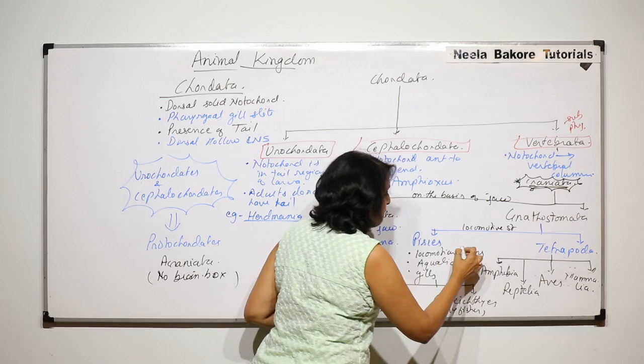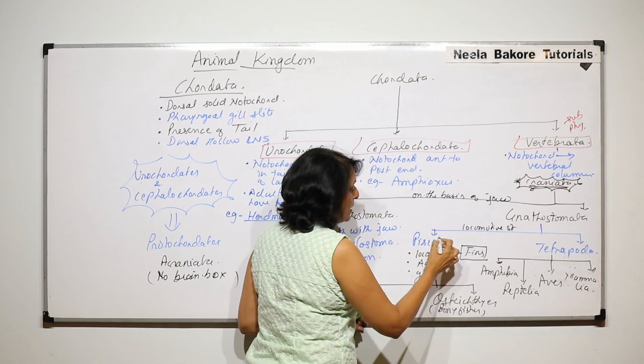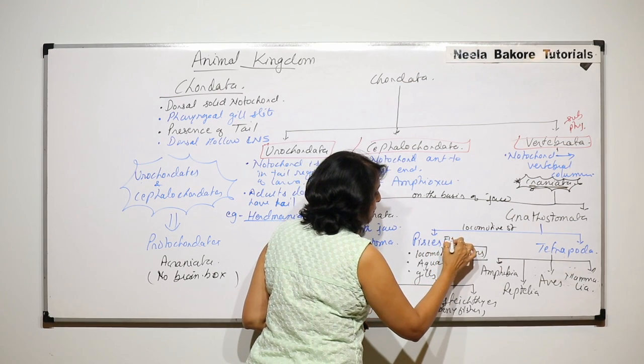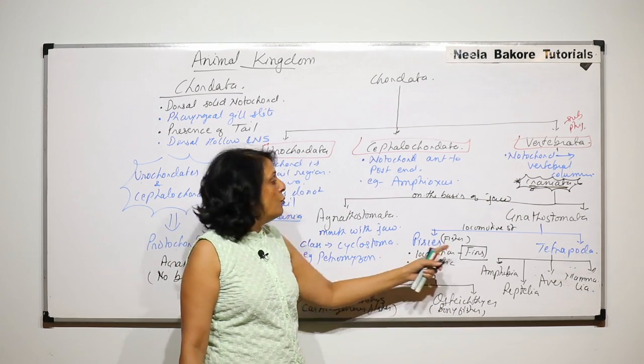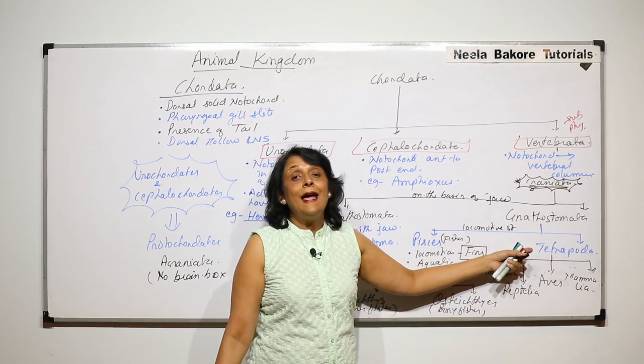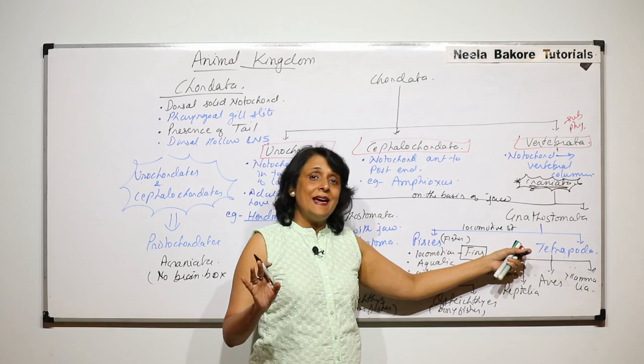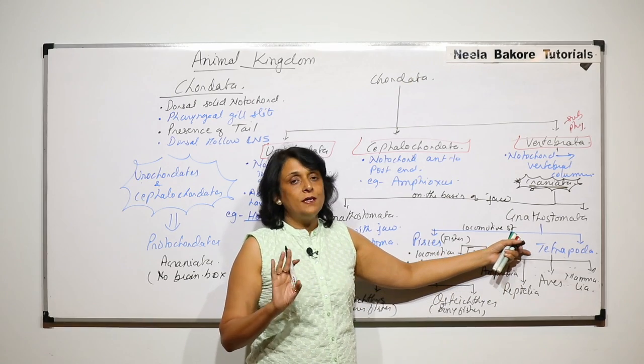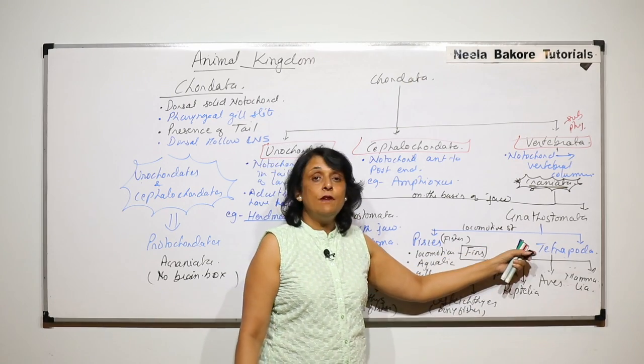Pisces and Tetrapoda. Pisces have fins. Pisces are commonly just termed as fishes. They have fins for locomotion and Tetrapoda have four limbs. The limbs may get modified for performing some specific function, but they have four limbs.